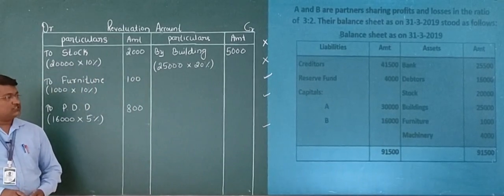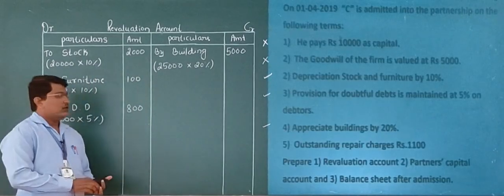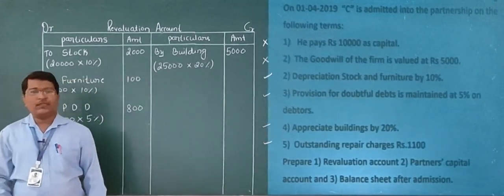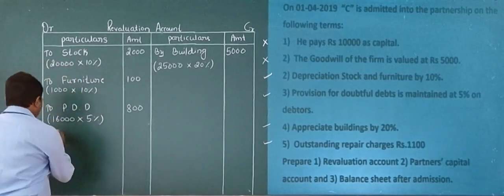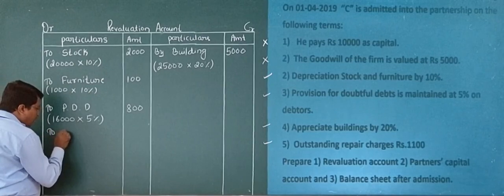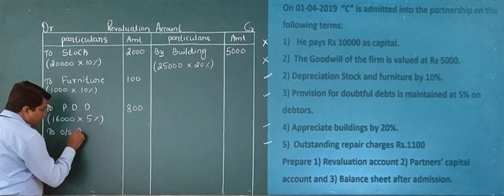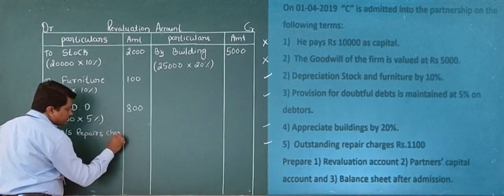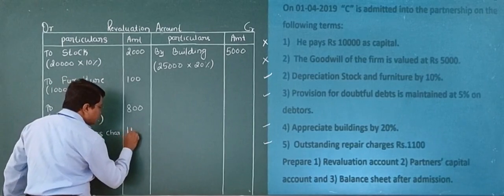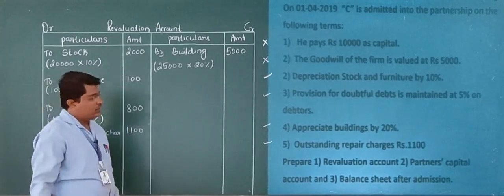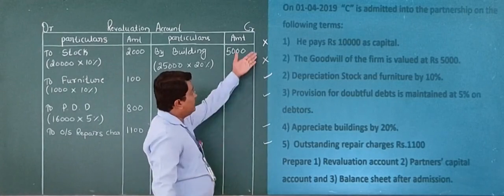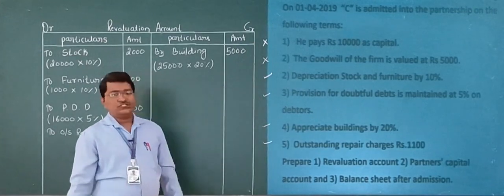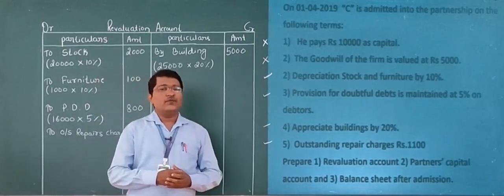Now we go for the last adjustment — outstanding repair charge. Outstanding expense is recorded at the debit side. Outstanding repair charge amount is Rs. 1,100. Now all four adjustments are complete and all four are recorded in the revaluation account.